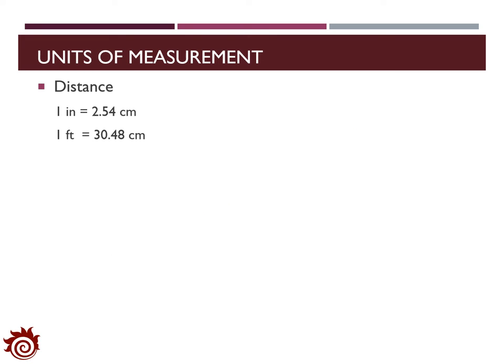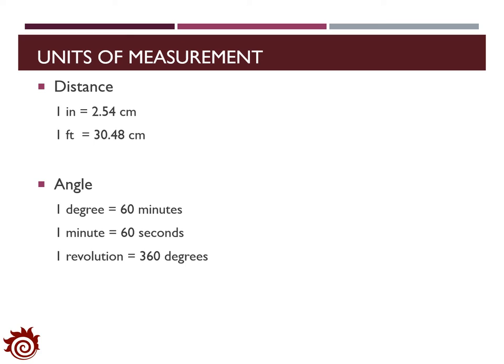Another important concept is units of measurement. Surveying tries to conduct meaningful measurements, and to make them meaningful we need to specify appropriate units. In this class, we will use both imperial and international units. For distance: one inch equals 2.54 centimeters, and one foot equals 30.48 centimeters. For angle and direction: one degree is 60 minutes, one minute is 60 seconds, and one revolution is 360 degrees.